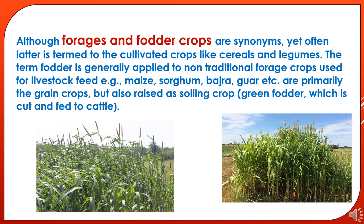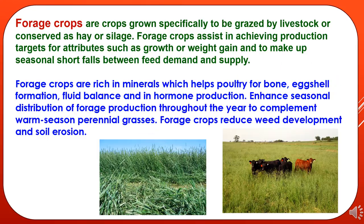Cereals, fodders and forages belong to family Poaceae, and legumes belong to family Fabaceae. Although forages and fodder crops are synonymous, the term fodder is generally applied to cultivated crops like cereals and legumes, as well as non-traditional forage crops used for livestock feed like maize, sorghum, bajra, and guar, which are primarily grain crops but also raised as soiling crops.